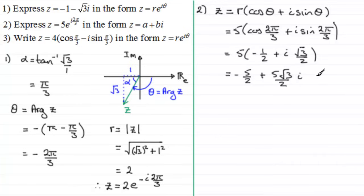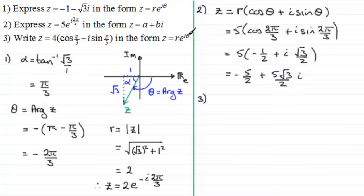Now for three — I did say to have a go at this one, purely because it has a slight twist. What I notice is that this is not in mod-arg form. Mod-arg form has a plus here, where theta is the arg of z. It's easy to think that π/3 is going to be the arg, but it's not, purely because we haven't got a plus here — we've got a minus.